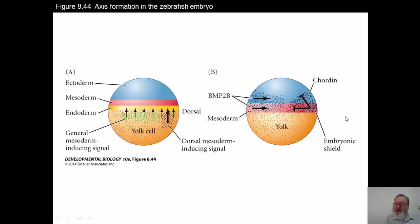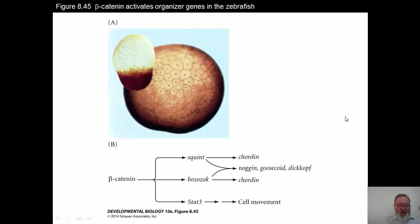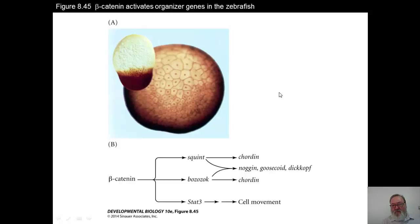Just briefly, I'd like to mention a little more about organizer function. Beta-catenin is an important organizer, which will give rise to some other materials — chordin being one, noggin, goosecoid, squint, Stat-3, and so forth. These are factors which will result in the organization of the zebrafish to have anterior-posterior organization. You don't need to remember all the details, but just realize that there are organizer genes in the zebrafish that beta-catenin activates in order to cause this axis formation to take place.